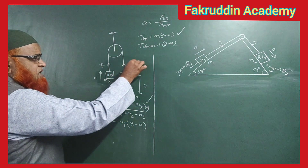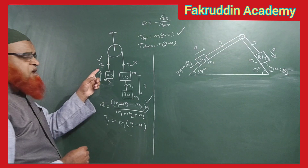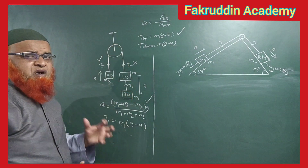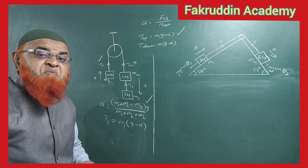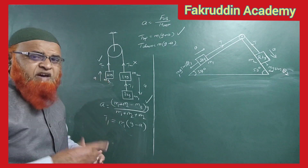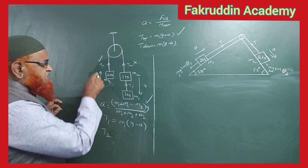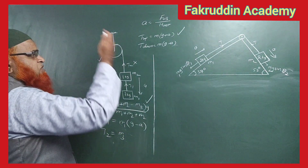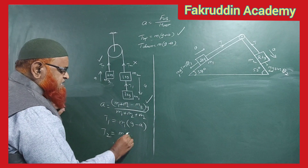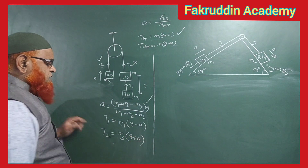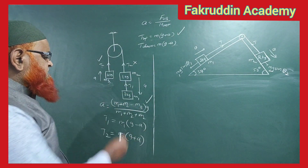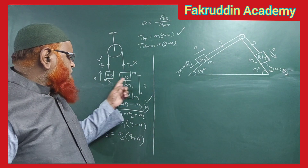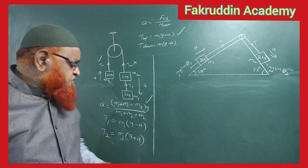To find tension T2, instead of considering two downward blocks (which becomes complex), we take T2 from block m3 which is moving upwards. For an upward-moving block the formula is T = m·(g+a), so T2 = m3·(g+a). Substituting m1=3, m2=2, m3=2 gives the answer very easily.